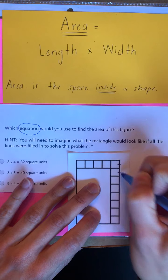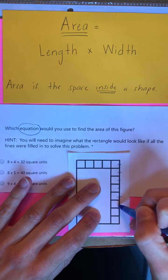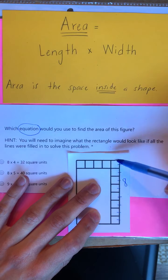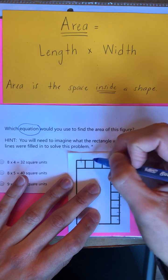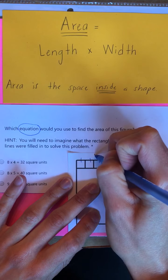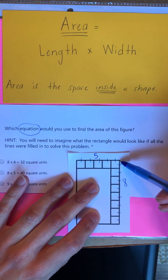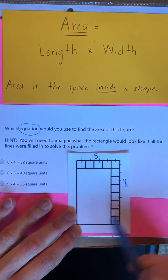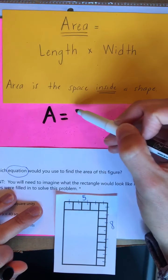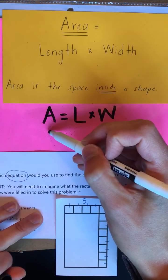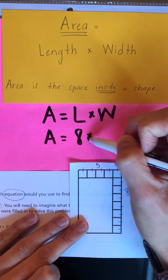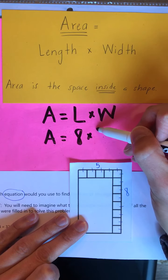Let's count up the length together. I like to remember that the length is the long side: 1, 2, 3, 4, 5, 6, 7, 8. So our length is 8 units. And our width — the wide side — let's count: 1, 2, 3, 4, 5. Our width is 5 units. So we're going to use our length and our width to find the area, or the space inside this whole shape. Remember, our formula is area equals length times width. Our area is equal to the length, which is 8 units, multiplied by the width, which is 5 units.